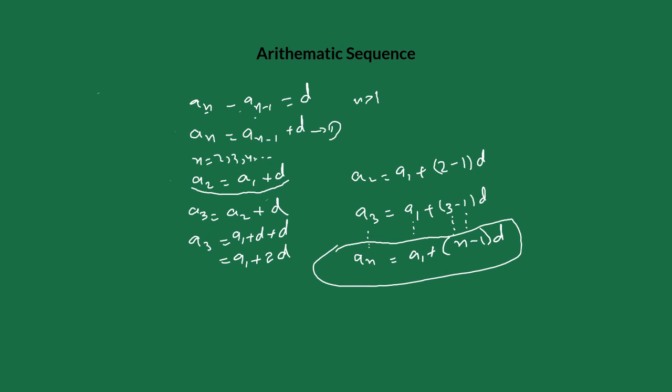Keep in mind: a_n is the nth term, a_1 is the first term, n is the number of terms, and d is the common difference. Using this formula you can figure out any term of the sequence. For example, if the first term of a sequence is 12 and the common difference is 3, what would be the 24th term? This is a simple and common example.